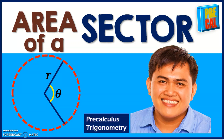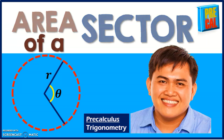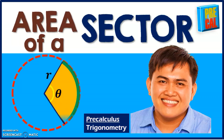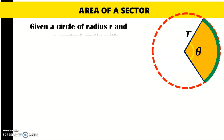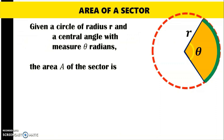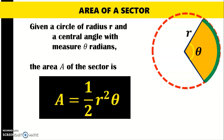After learning how to solve for the arc length, your next lesson in precalculus is about the area of a sector. Given a circle of radius r and a central angle with measure theta radians, the area of the sector is given by one-half r squared theta.